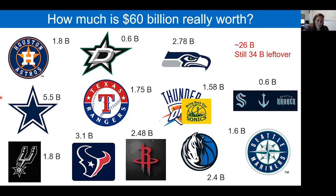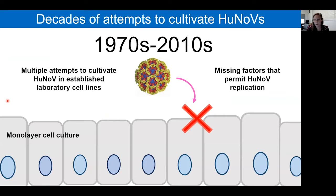So why haven't we developed more therapeutics for these important viruses? Despite decades of attempts to cultivate human noroviruses and establish laboratory cell lines, none of these attempts were successful, indicating there's a missing factor in these continuous cell lines that would permit norovirus infection.